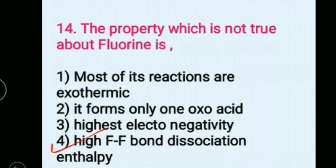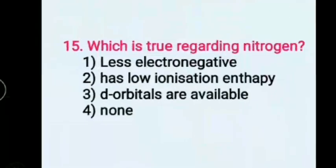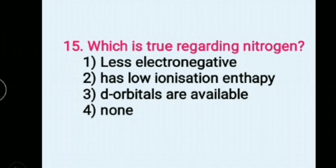Which is true regarding nitrogen? Options: 1) Less electronegative, 2) Has low ionization enthalpy, 3) D orbitals are available, 4) None. Answer: 4) None.